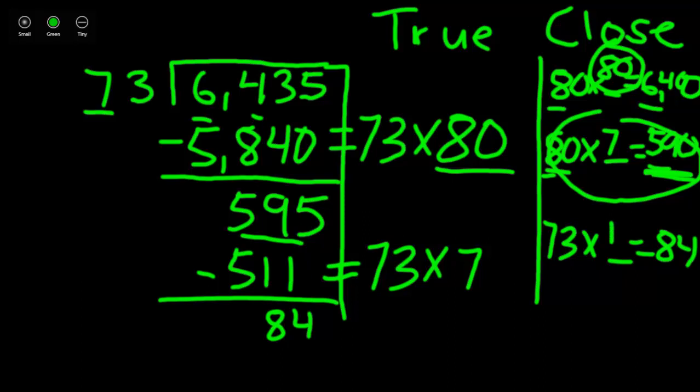Let's bring that back and make that statement true. 73 times 1 is equal to 73. If you subtract to find out how much you have left to divide, you will have 11.